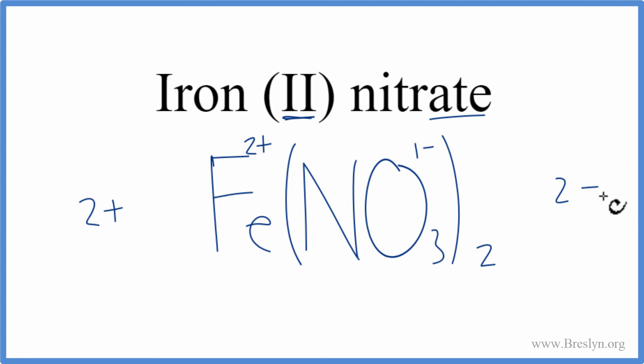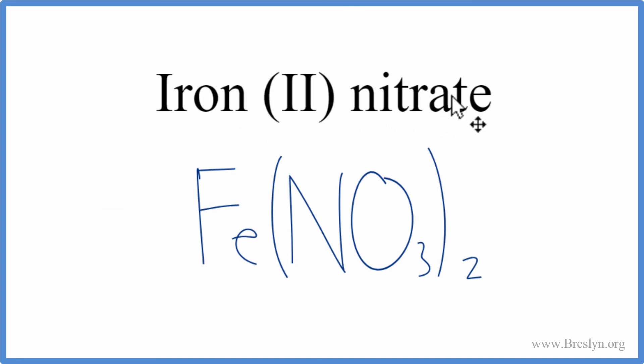So these two, they add up to 0. That makes this the correct formula for iron(II) nitrate. Let's clean it up a little bit. And that's the formula for iron(II) nitrate, Fe(NO3)2.